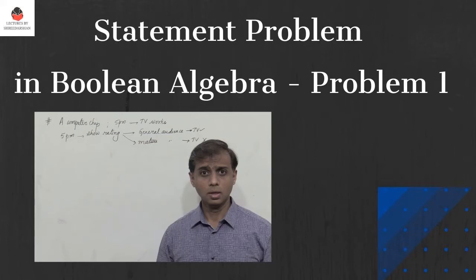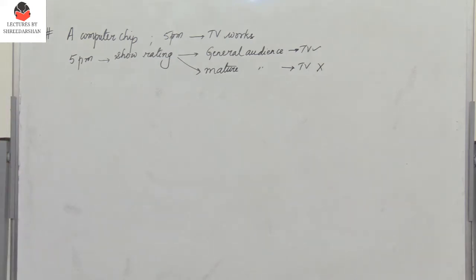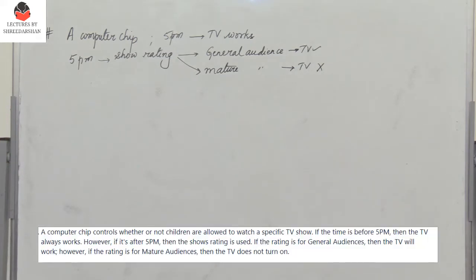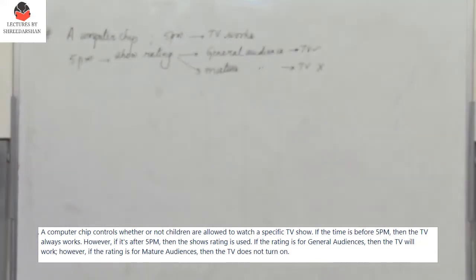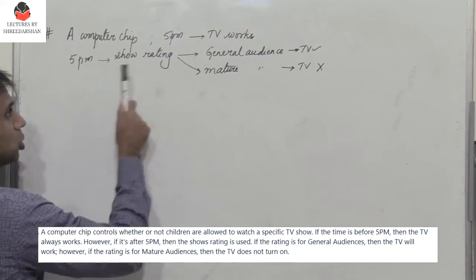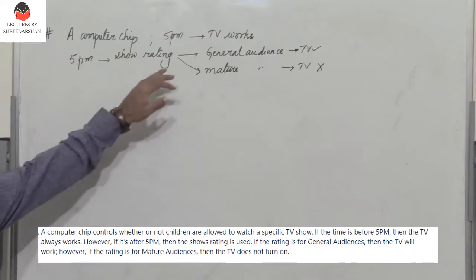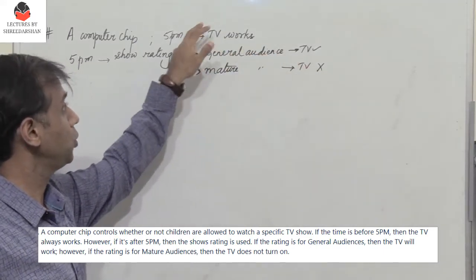Hello friends and students, let's go through another interesting statement problem. We have a computer chip which controls the working of the TV. If it is before 5 p.m., the TV works - it's on for the general audience and children can view TV shows. If it is after 5 p.m., the TV works based on show rating. If it's for general audience, the TV is on; if it's for mature audience, the TV is off. But before 5 p.m., the TV is always on.